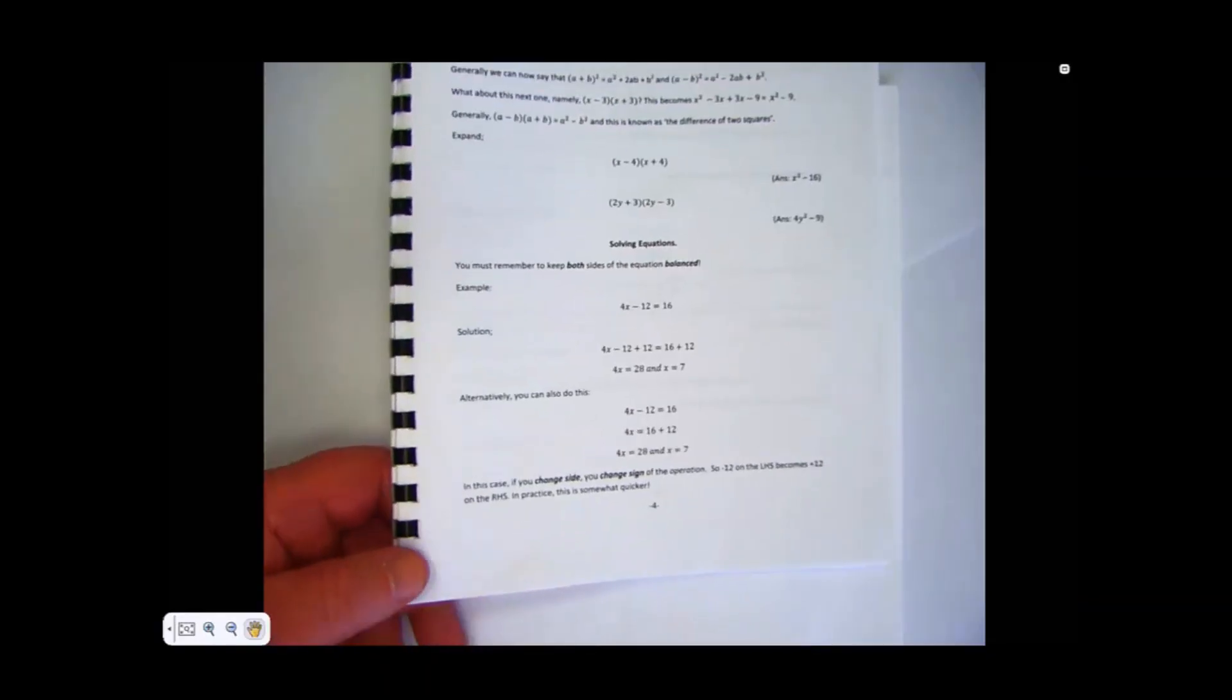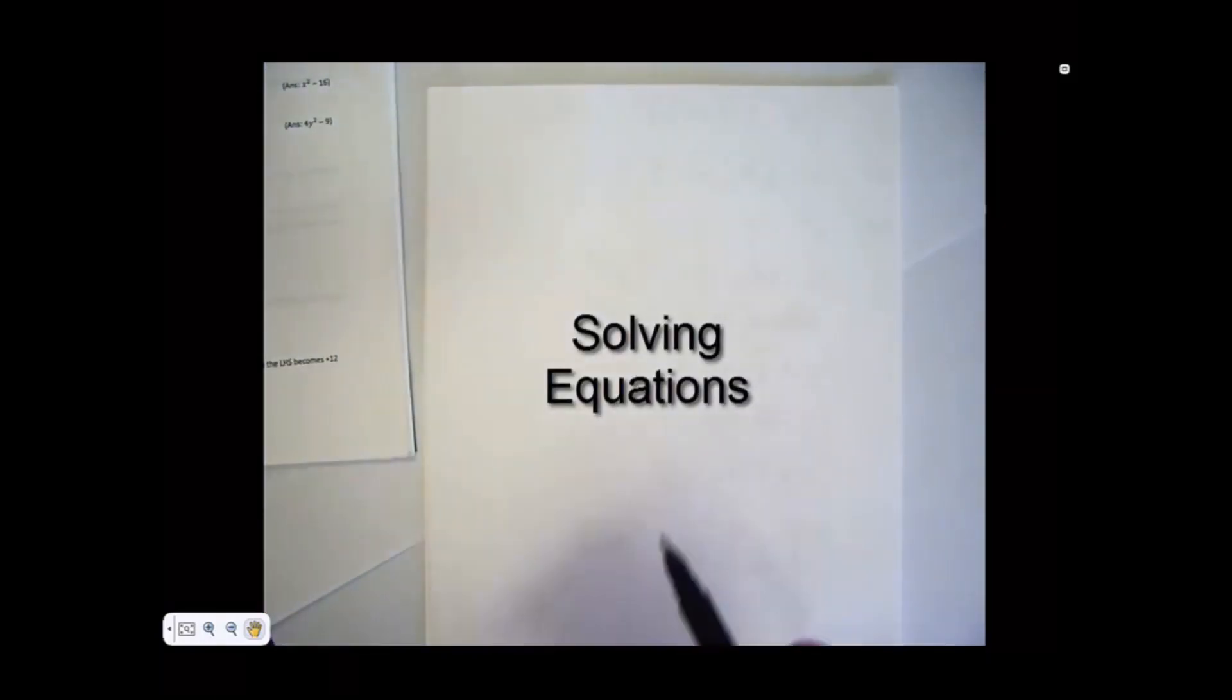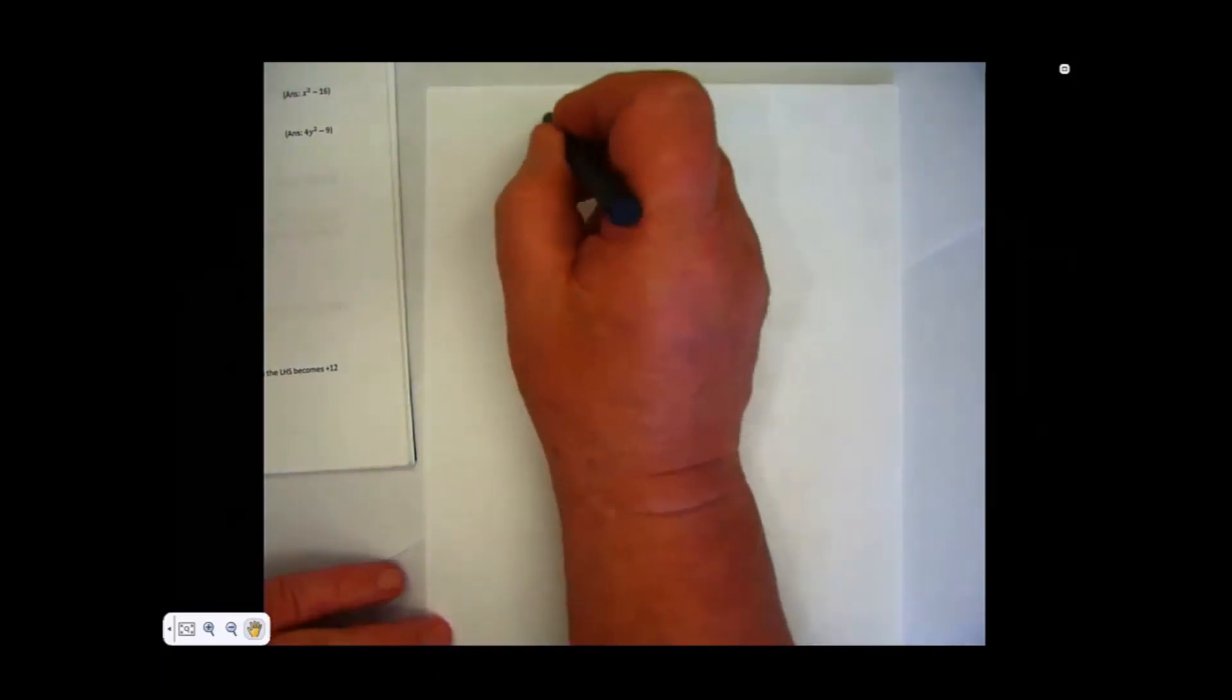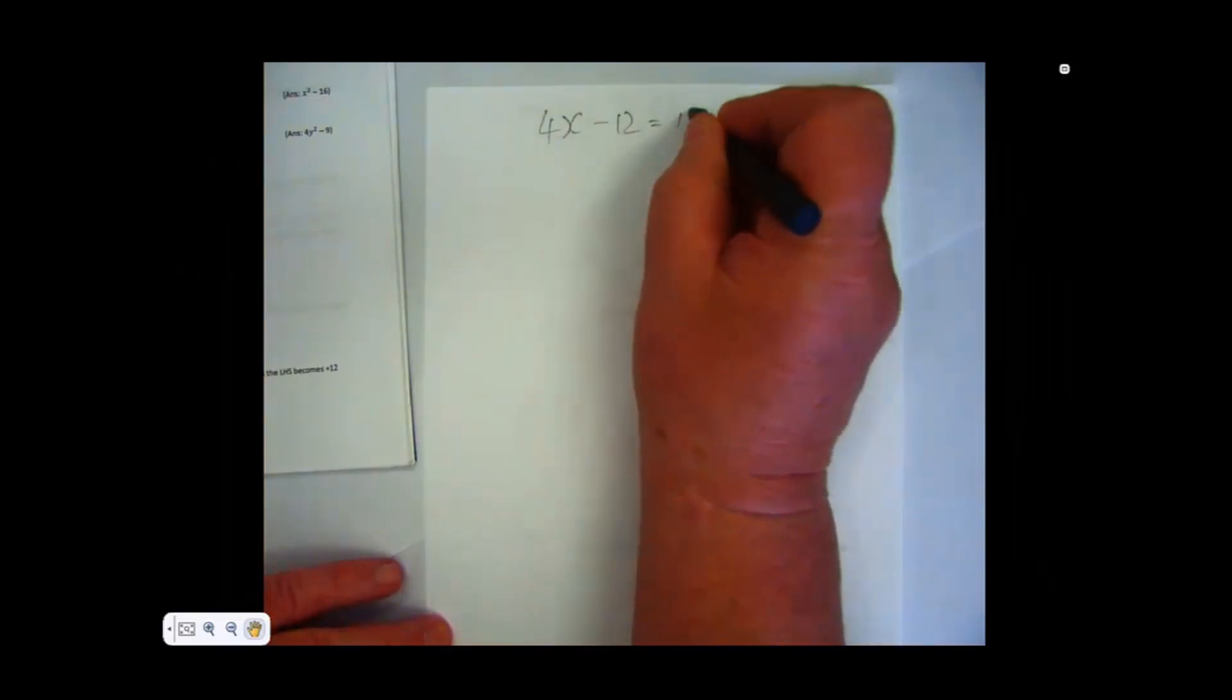Okay, in your book, if you have a look on page four, we're now looking at the next little section called solving equations. And that's where I will start and work through the problems here. Now the key thing in solving equations, you must keep both sides of the equation balanced.